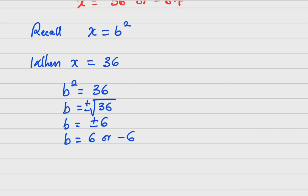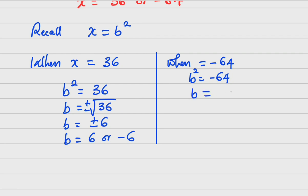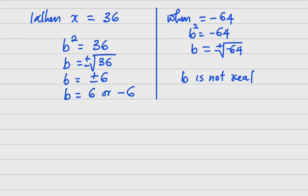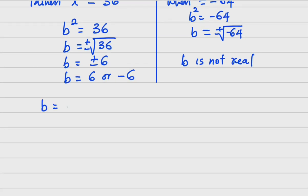On the other hand, when x = −64, we get b² = −64, so b = ±√(−64). The square root of a negative number does not exist in the real plane, so b is not real in this case. Since the instruction is to find the real values of a and b, we neglect this case.